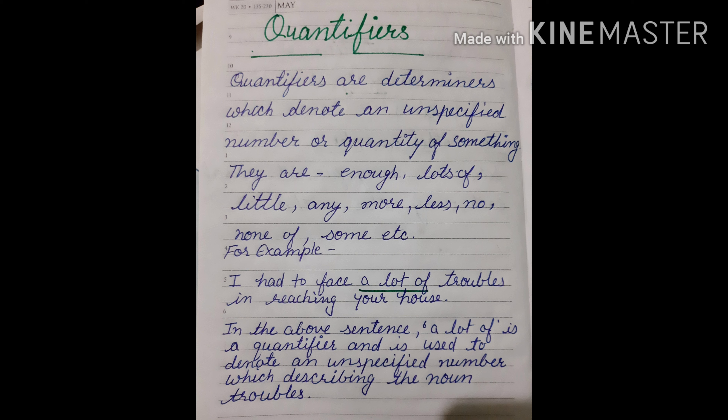Quantifiers include: enough, lots of, little, any, more, less, no, none of, some, etc. For example: 'I had to face a lot of troubles in reaching your house.' In the above sentence, 'a lot of' is a quantifier and is used to denote an unspecified number while describing the noun 'troubles'.